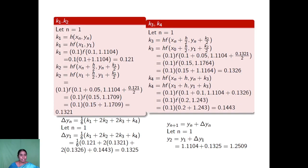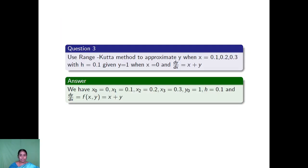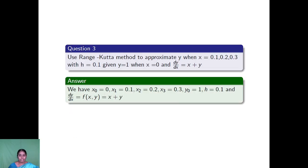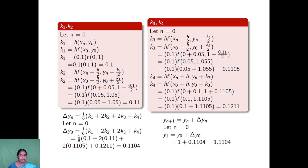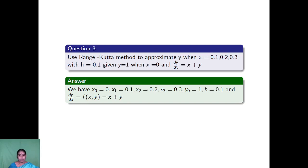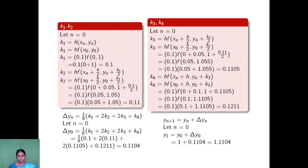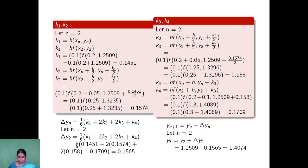We have calculated: x0 equals 0, x1 equals 0.1, x2 equals 0.2, and x3 equals 0.3. For x equal to 0.1, we considered n equal to 0. For x equal to 0.2, we considered n equal to 1. For x equal to 0.3, we considered n equal to 2. In this way, we have calculated y1, then y2, then y3. This completes the Runge-Kutta method of fourth order. Thank you.